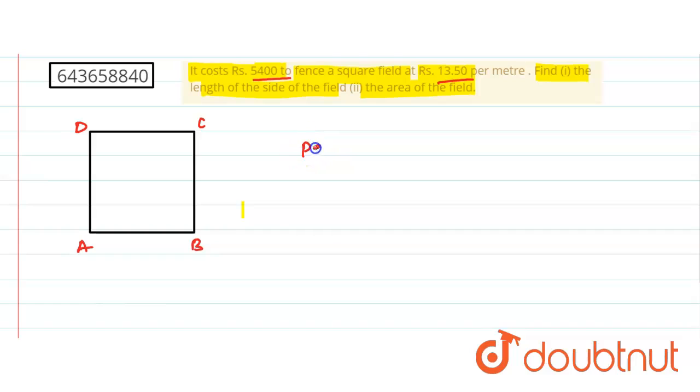So therefore perimeter is equal to what? How do we get the perimeter? We just divide the total cost by rate, so that we get the perimeter.